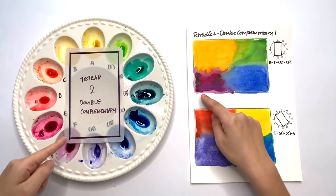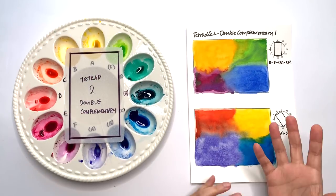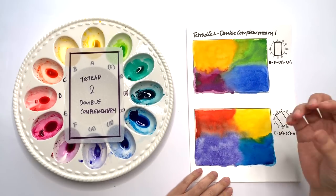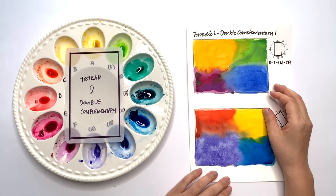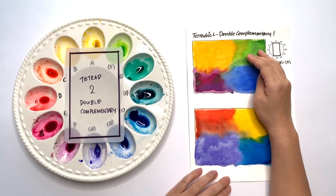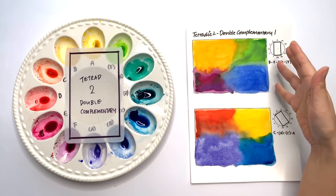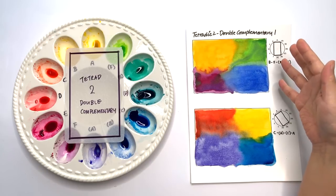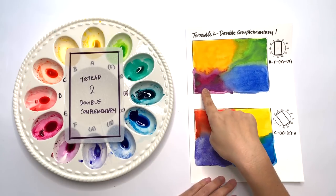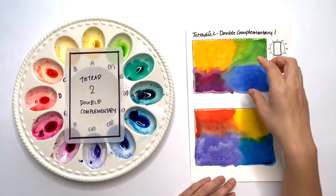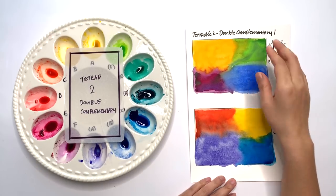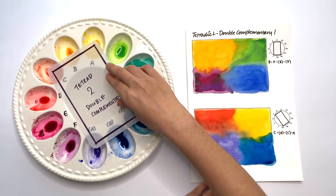The square also can be classified as double complementary because it also has two pairs of complementary colors. However, it's more well known as the square. So here is the double complementary tetrad and the first setup is the B pairs and then the F pairs. Just like the square you still have a lot of brightness and colors vibrating off each other because you have the two complementary colors.